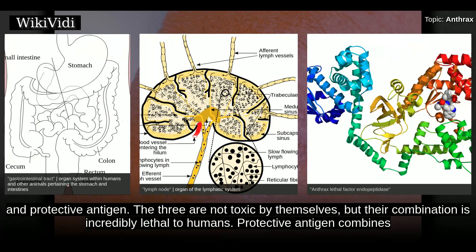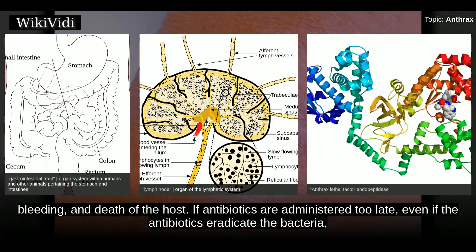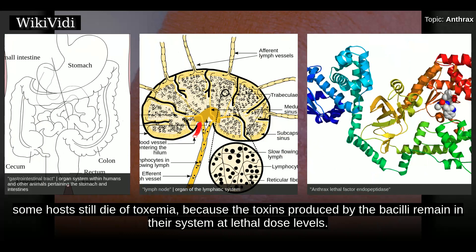The three are not toxic by themselves, but their combination is incredibly lethal to humans. Protective antigen combines with these other two factors to form lethal toxin and edema toxin, respectively. These toxins are the primary agents of tissue destruction, bleeding, and death of the host. If antibiotics are administered too late, even if the antibiotics eradicate the bacteria, some hosts still die of toxemia, because the toxins produced by the bacilli remain in their system at lethal dose levels.